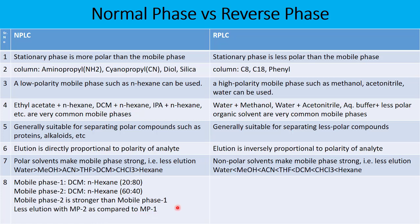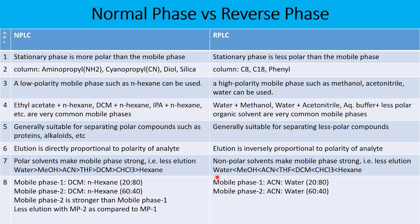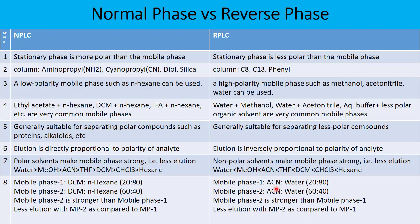Let us understand elution in reverse phase. Mobile phase one is ACN:water at 20:80 and mobile phase two is ACN:water at 60:40. Since non-polar solvents make the mobile phase stronger in reverse phase, and ACN is non-polar compared to water, the mobile phase with more ACN — mobile phase two at 60:40 — is stronger. Therefore, compounds will have less retention time in mobile phase two, which contains a greater amount of acetonitrile.